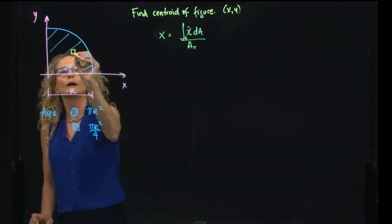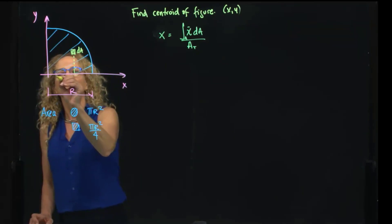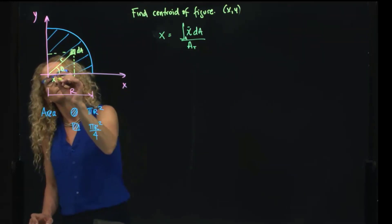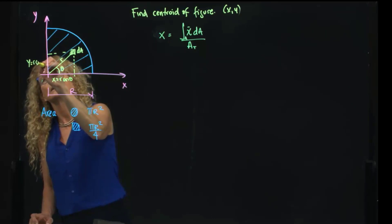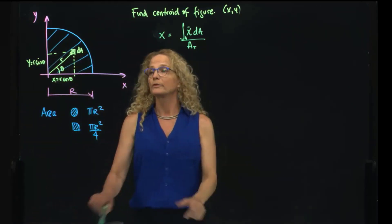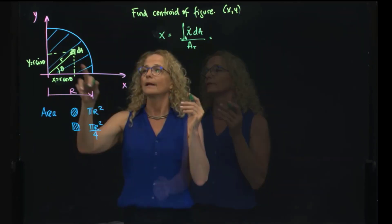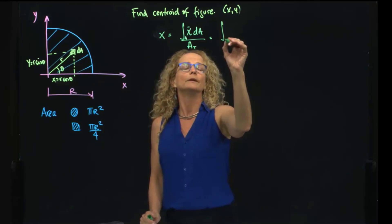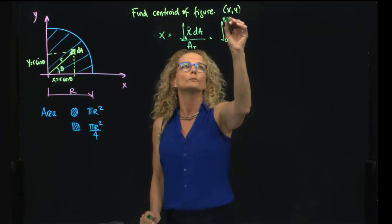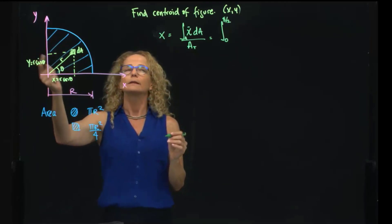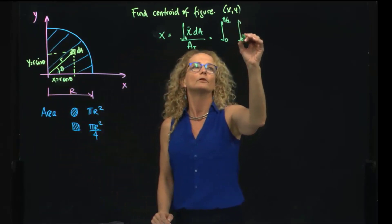If we want to find x, we have to choose a differential of area right here that will be located at r and theta. Therefore, x will be r cosine of theta, and y will be r sine of theta. When we substitute my differential of area in cylindrical coordinates in terms of r and theta, this will be a double integral that goes from 0 to pi half, because that's how I cover theta, and it will be from 0 to r.